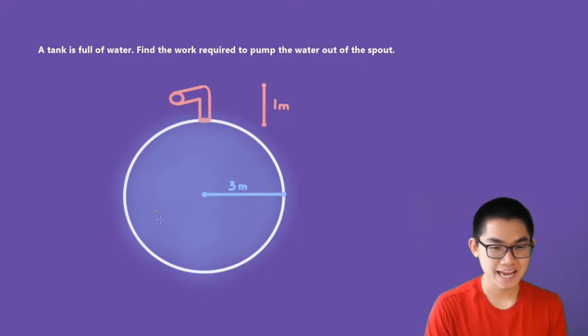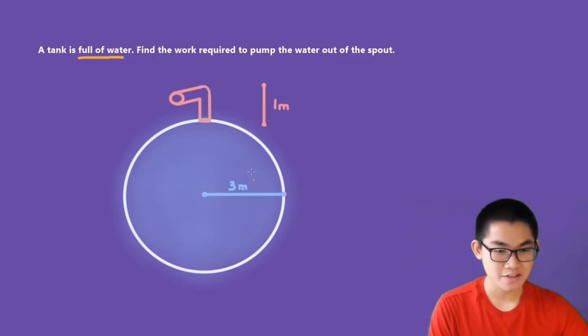So we're given a tank. This tank is full of water and we have to find the amount of work to pump all of this water out of the spout. The radius of this circle, or rather this three-dimensional sphere, is three meters, and we also know that the height of this spout is one meter.